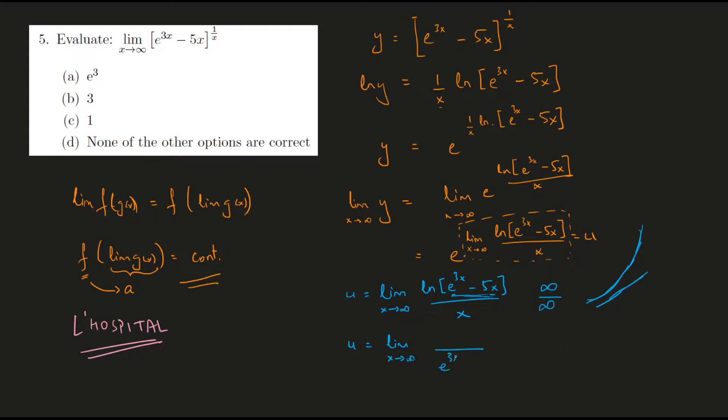So this can be simplified: the derivative of the numerator would be something like this, and then we would have e to the power of 3x times 3 minus 5. And the denominator is just going to be 1—the derivative of x is just 1.